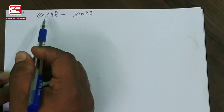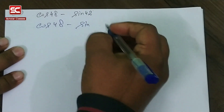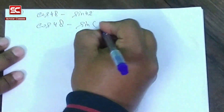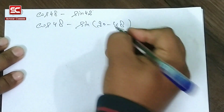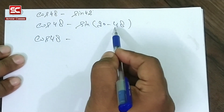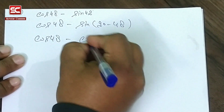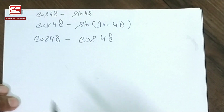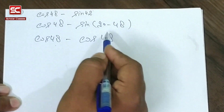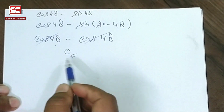Now come to the third part of the question: cos 48 minus sin 42. We change 42 as (90 minus 48), so we write cos 48 minus sin(90 minus 48). Since sin(90 minus theta) equals cos theta, sin(90 minus 48) equals cos 48. So cos 48 minus cos 48 cancels, and the final answer is 0.